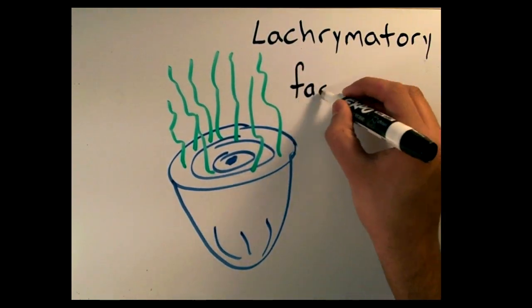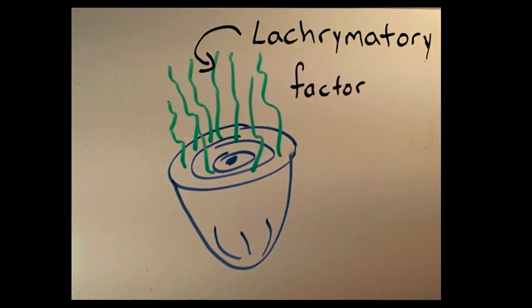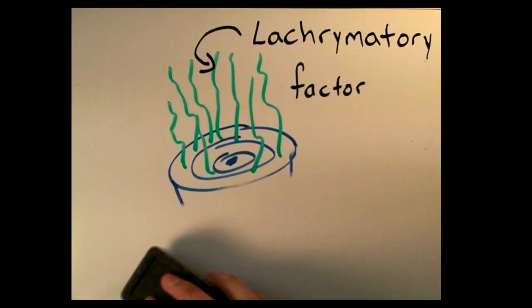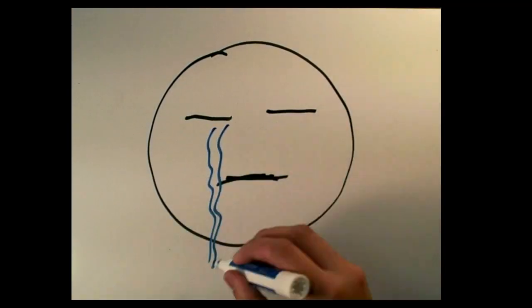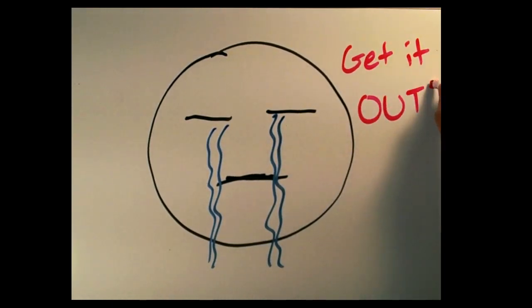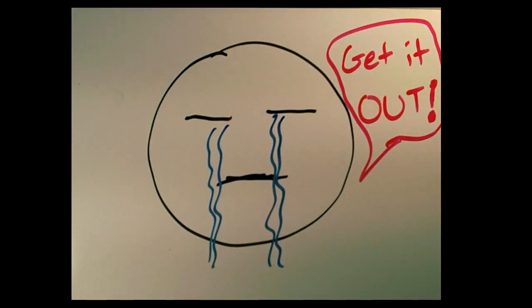In case you didn't know, volatile substances evaporate easily at room temperature. This gas is an eye irritant. It diffuses up to your eyes and creates that stinging sensation. You start tearing up, blinking and squinting because your eyes are trying to flush the irritant out.